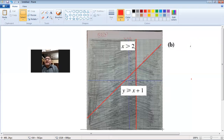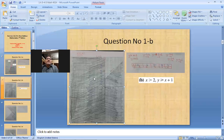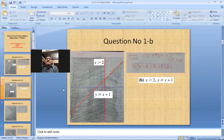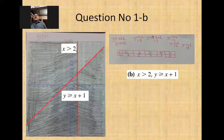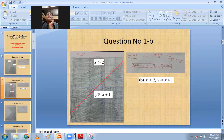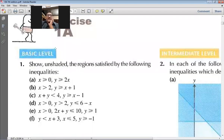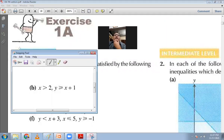This is the b part — you should do this on your graph copy. We are done with question one part b. Now you can see clearly how this looks — this is question number one, b part.